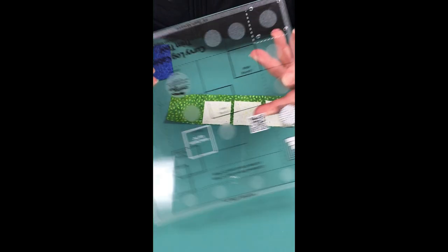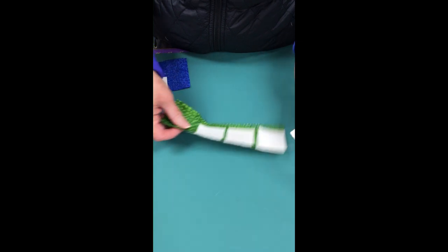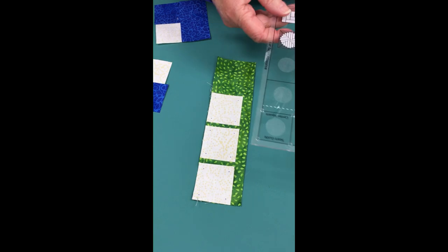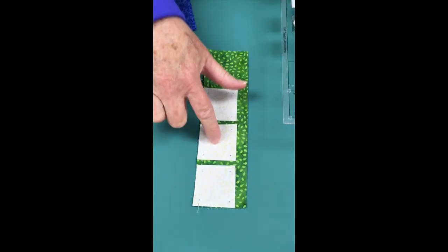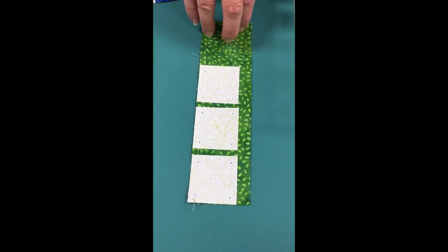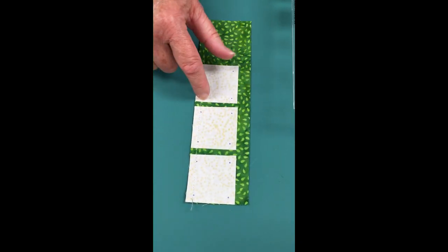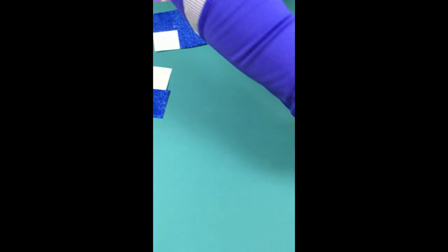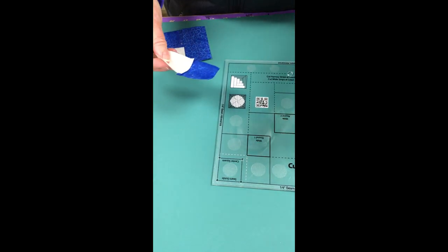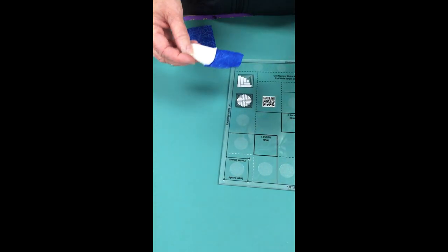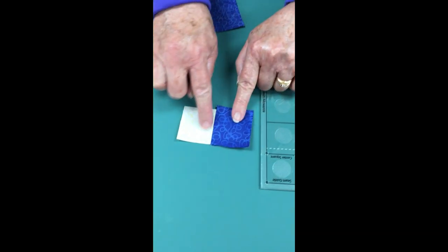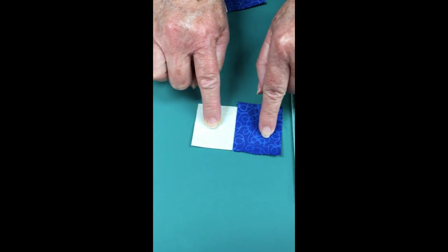When I'm doing a block like this, I typically start by chain piecing. I'll take three center squares and chain piece them to my first log fabric, then rough cut them apart. Chain piecing is a quick way to get going, especially with the smaller sections when you've only added a round or two.